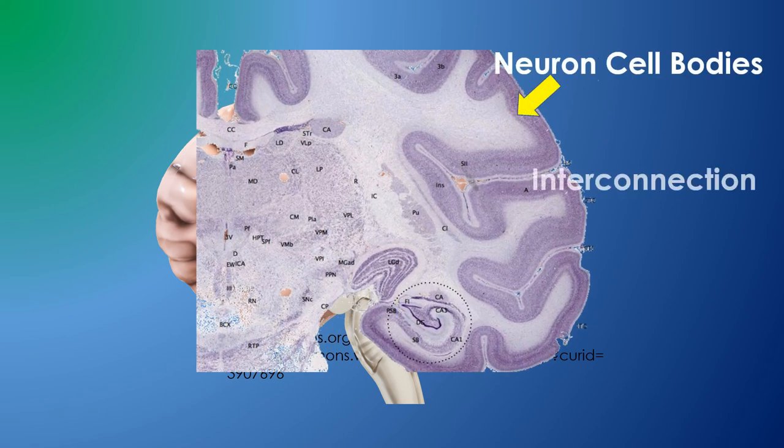Neuron cell bodies are on the surface of the brain, and the interior is a mass of interconnecting axons. In this image, you can see that the amount of interconnection is very large relative to the neuron cell bodies on the surface.